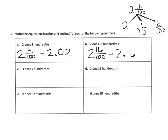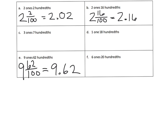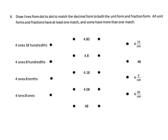One last example: nine ones and sixty-two hundredths equals nine point six two. We have nine wholes, six tenths, and two hundredths. We can write that in expanded form as nine plus six tenths plus two hundredths.